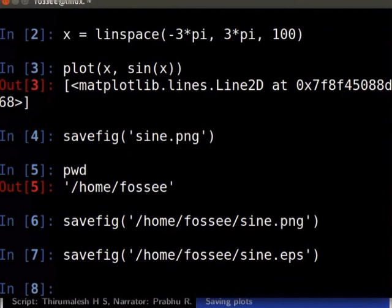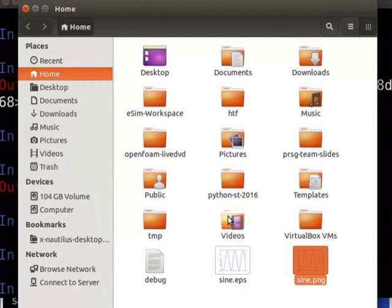Now let us go to /home/fossee and see the new file created. We see the file sine.eps here.